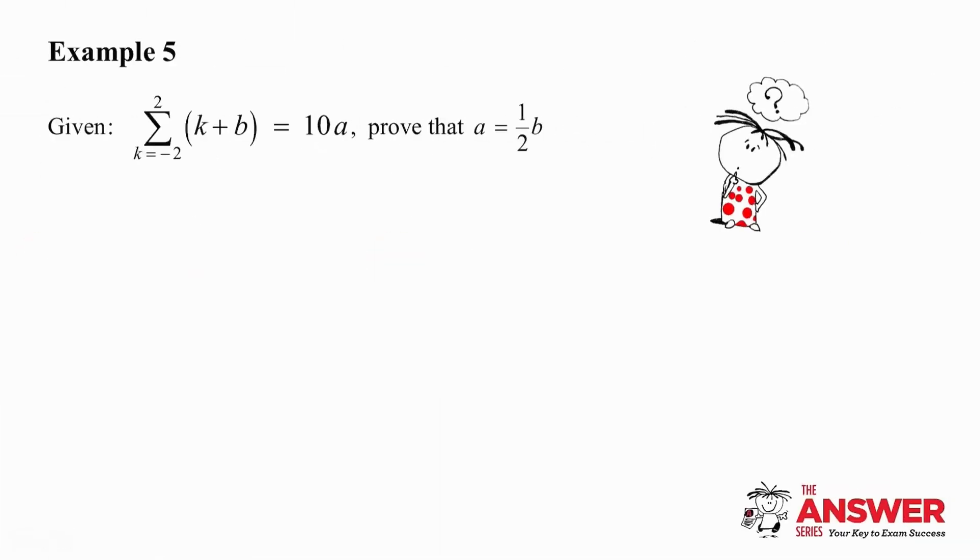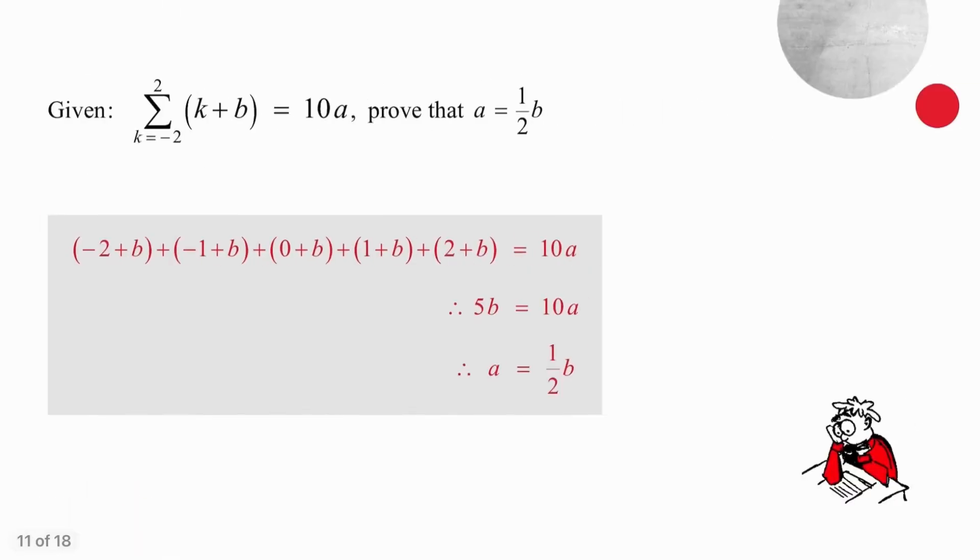Example 5 is refreshingly different. Pause the video and try this on your own. What is important to notice here is the fact that p is an unknown constant, whereas k is an unknown variable, because as we substitute the values of k that we have been given, we will continually change that result. With that substitution, you will get to 5b equal to 10a, which will give you the answer you need of a equal to a half b.